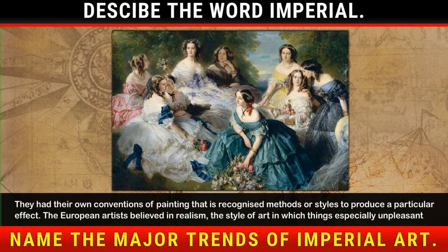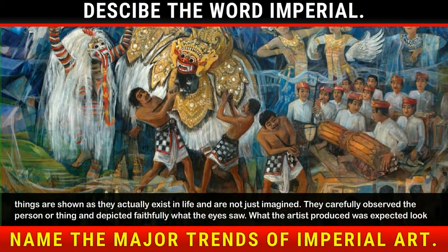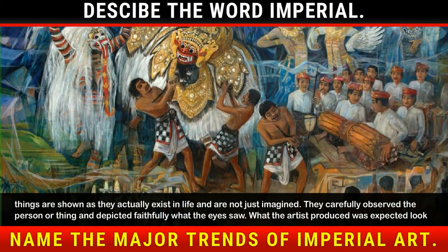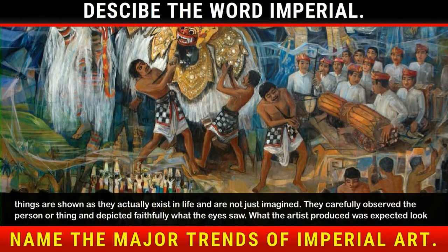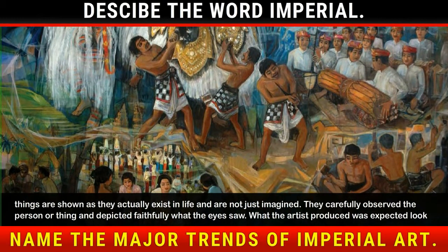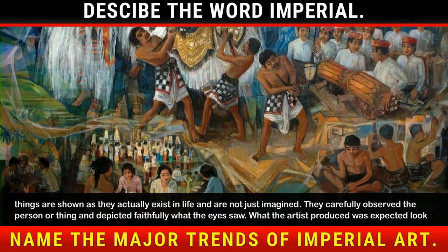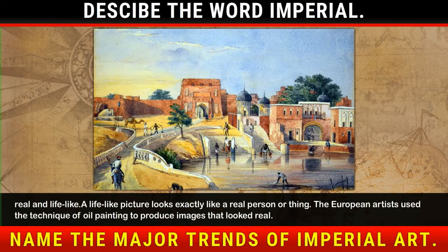The European artists believed in realism — the style of art in which things, especially unpleasant things, are shown as they actually exist in life and are not just imagined. They carefully observed the person or thing and depicted faithfully what the eyes saw. What the artist produced was expected to look real and lifelike — exactly like a real person or thing.